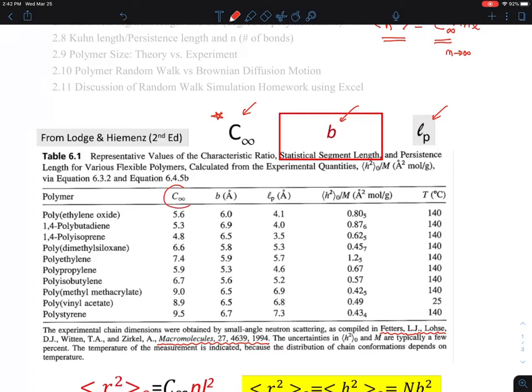And this characteristic ratio, each polymer has a different value. Polyethylene is 7.4. Polystyrene is 9.5. And so on. So we can find out the value corresponding to these numbers.